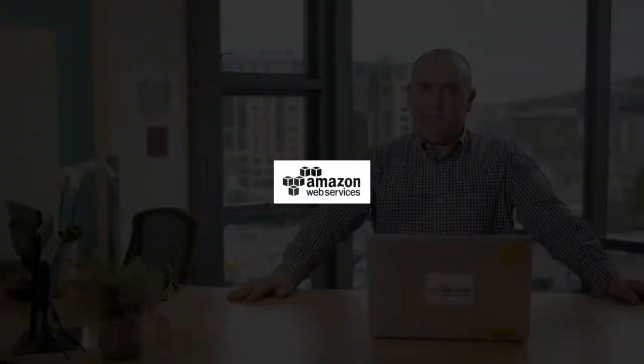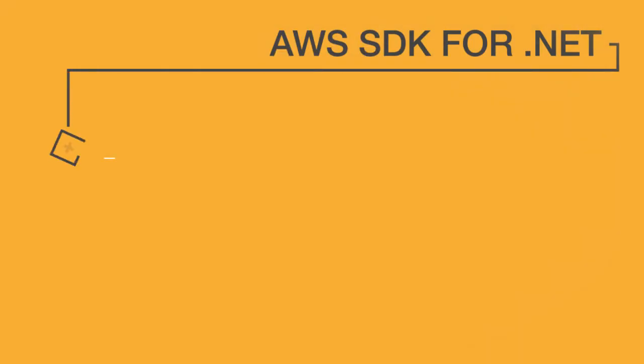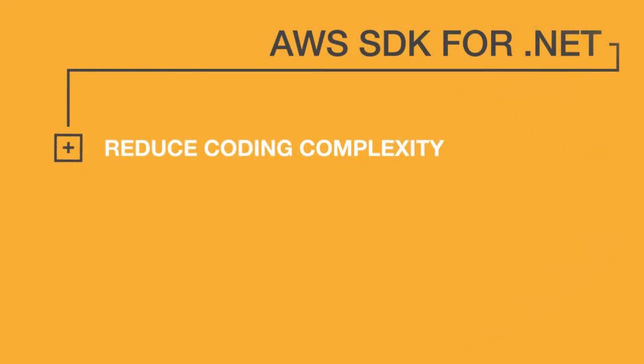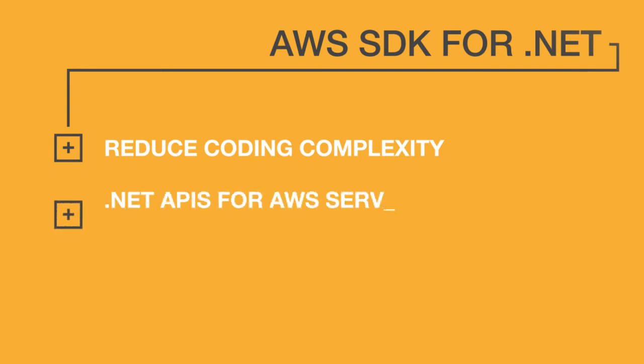AWS provides tools developers can use to manage AWS services and Windows applications, empowering them to easily develop, debug, and deploy .NET projects. You can easily get started quickly with the AWS SDK for .NET. The SDK helps take the complexity out of coding by providing .NET APIs for AWS services, including Amazon S3, Amazon EC2, Amazon DynamoDB, and more.